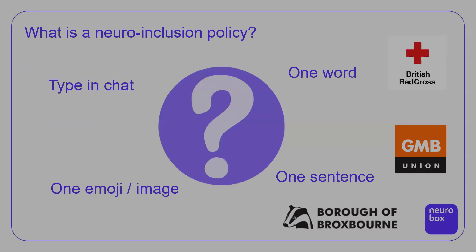I want to kick off by exploring what is a neuro inclusion policy. It's a relatively recent concept. There are some examples that I'll be referencing throughout our time together from the British Red Cross, the GMB Union, and also the Borough of Broxbourne.